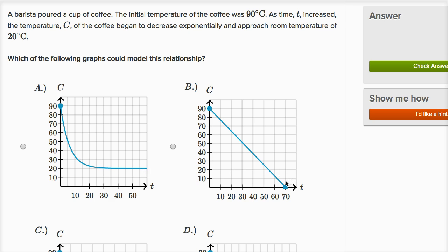Now this one, when T is 70 minutes, it looks like it has the temperature going to zero degrees Celsius. So that cup of coffee is going to start freezing. So I think I could rule out B. Also, this looks like a linear model, not an exponential one.